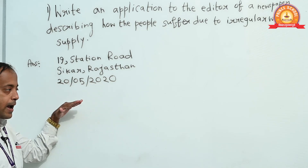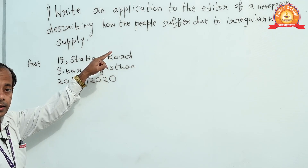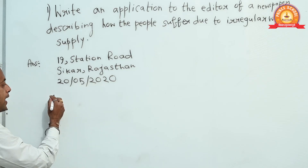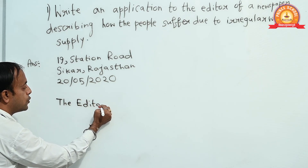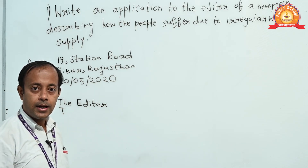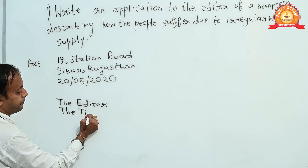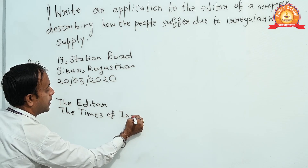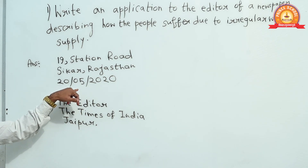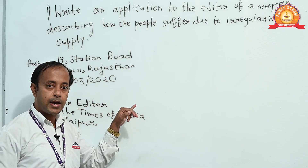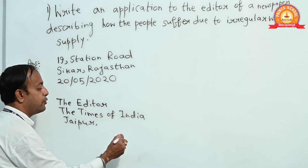Then don't leave any line or space — write down today's date: 20/05/2020. After the date, you have to leave one line, and after that write to whom you are writing the letter. Leave one line and write 'The Editor' — T capital, h small, e small — then the name of the newspaper. Preferably write the name of an English newspaper: 'Times of India, Jaipur.' Here you are writing the letter to the editor — their designation, the newspaper name, and the city from where the newspaper is published.